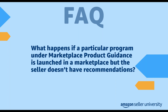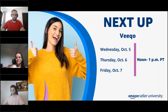The next question: what happens if a particular program under marketplace product guidance is launched in a marketplace but the seller doesn't have recommendations? The sellers will be able to see relevant program cards on the marketplace product guidance tab, but there will be a message on the program page indicating that they currently don't have recommendations.